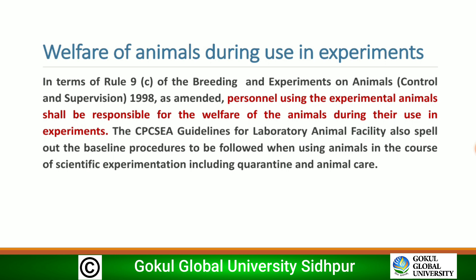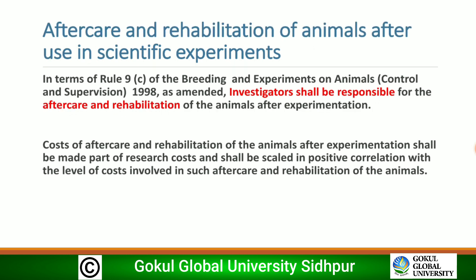Under Rule 9(c) of the Breeding and Experiments on Animals (Control and Supervision) Rules 1998 as amended, personnel using experimental animals shall be responsible for the welfare of the animals during their use in experiments. The CPCSEA guidelines for laboratory animal facilities also spell out baseline procedures to be followed when using animals in scientific experimentation, including quarantine and animal care.